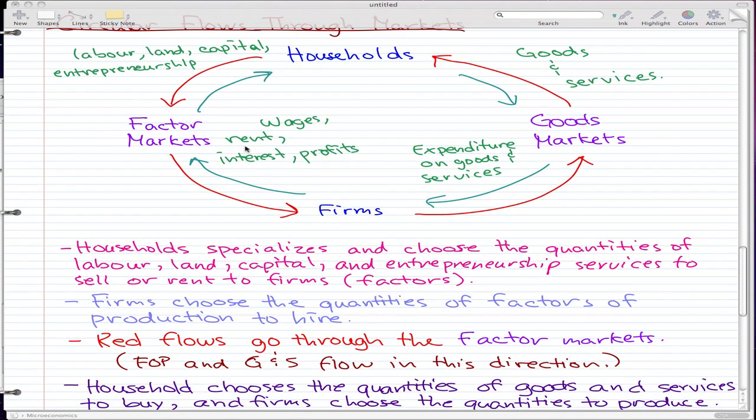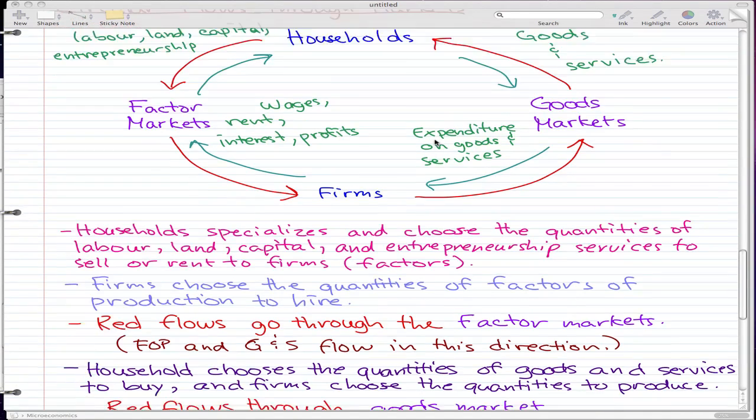And that's pretty much that. It's pretty similar to the factor markets and the ideology we went through. So this factor markets is the household providing the services, the firms choose the services to buy. And this part is the firms produce the services, and the households choose the services or goods to buy.